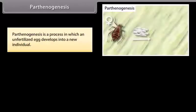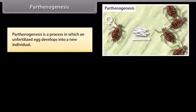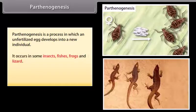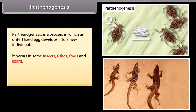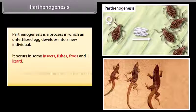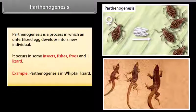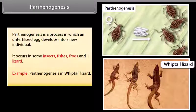Parthenogenesis is a process in which an unfertilized egg develops into a new individual. It occurs in some insects, fishes, frogs, and lizards. Example: parthenogenesis in the whiptail lizard.